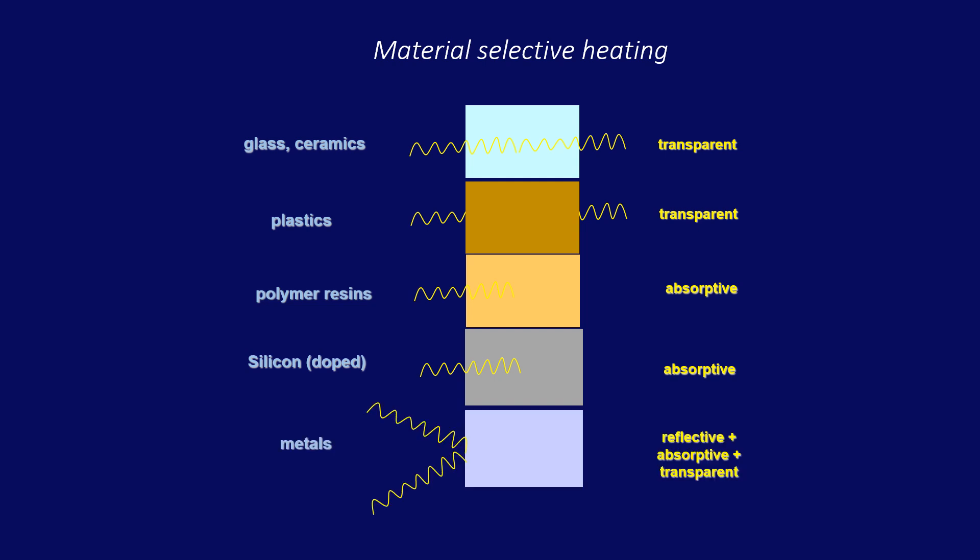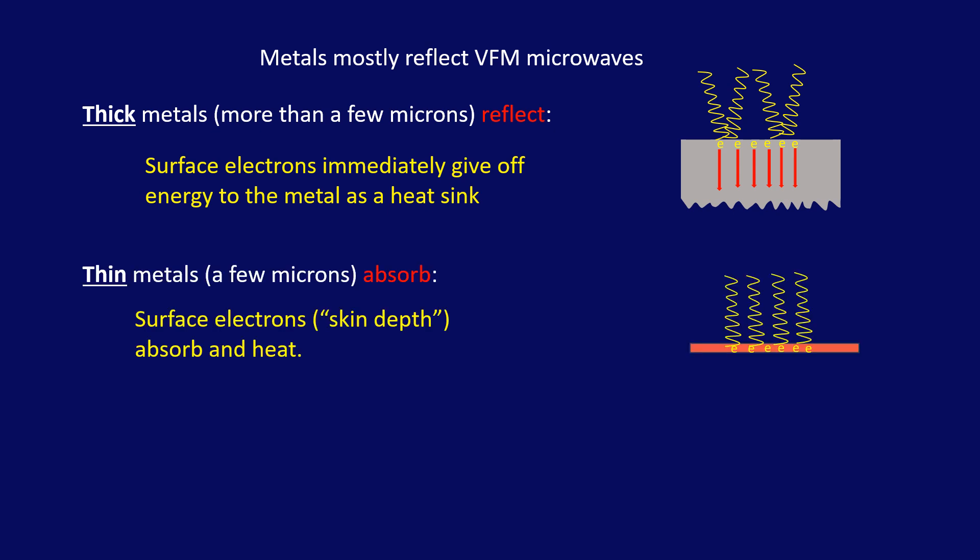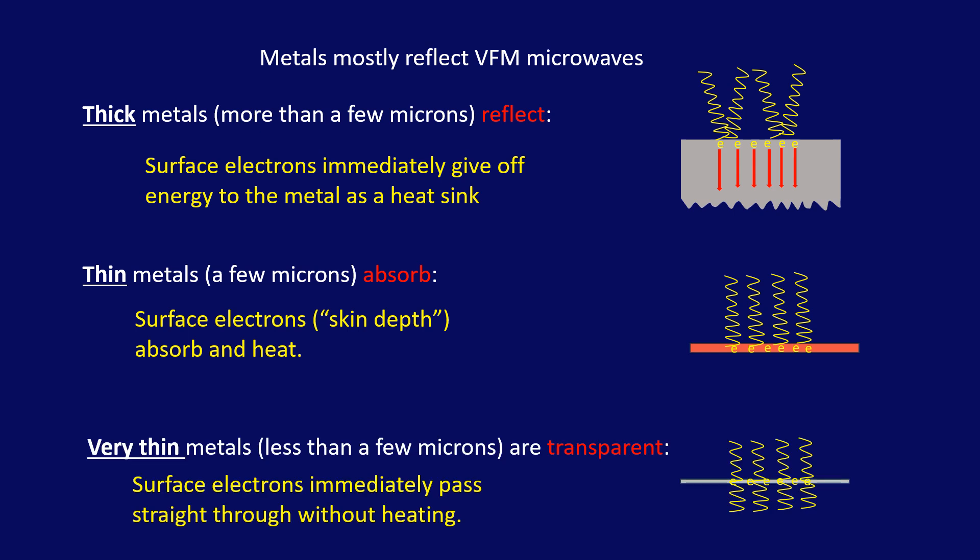Metals depend on their thickness, with details in the next slide. Thick metals, more than a few microns, reflect microwaves, because the first layer of electrons quickly pass on heat to the bulk of the metal, leaving the surface to reflect back the microwaves. At the thickness of a few microns, the electrons will absorb the energy and heat that thin metal layer. As mentioned above, no arcing will occur with VFM. At thinner layers, below a few microns, the electrons don't have time to produce heat, so the metal is transparent to microwaves.